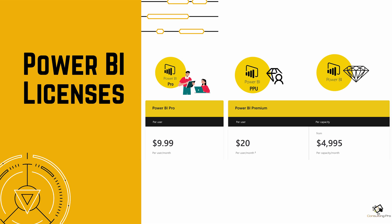The most important factor here is cost. Power BI Pro is available at $9.99 per user per month in USD. Power BI Premium Per User is $20 per user per month. And if you are going with Premium capacity, you start from $4,995. These prices are valid as of the publishing of this video and may change in the future.